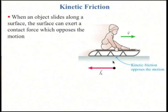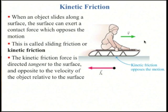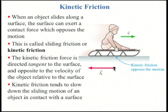Kinetic friction: when an object slides along a surface, the surface can exert a contact force which opposes the motion. This is called sliding friction or kinetic friction. Here we have a sled moving towards the right. The kinetic friction is tangent to the surface and opposite the velocity of the object relative to the surface. Kinetic friction tends to slow down the sliding motion and creates heat, dissipating energy of motion into thermal energy.